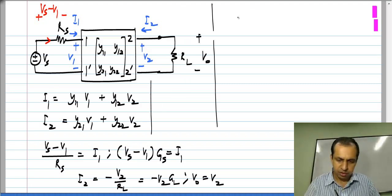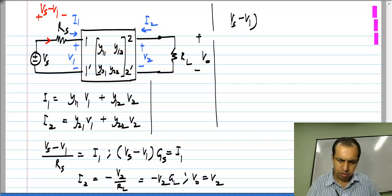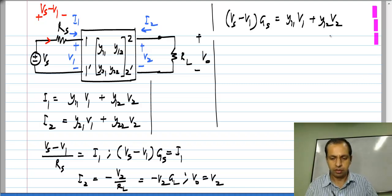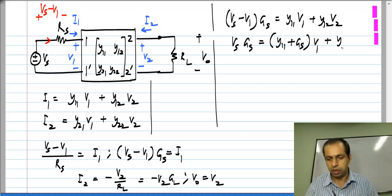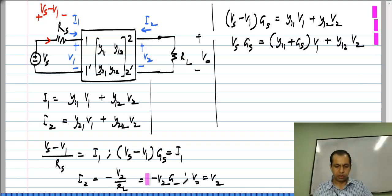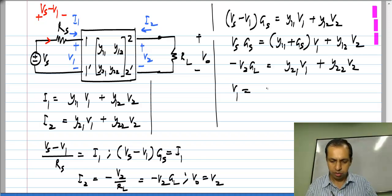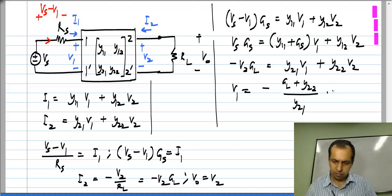So I will first substitute this into the first equation I will have V s minus V 1 times G s to be Y 1 1 V 1 plus Y 1 2 V 2. So this gives you V s G s to be Y 1 1 plus G s times V 1 plus Y 1 2 V 2 and I will substitute I 2 equals minus V 2 G l in the second equation which gives me minus V 2 G l is Y 2 1 V 1 plus Y 2 2 V 2 and this gives you V 1 to be minus G l plus Y 2 2 divided by Y 2 1 times V 2.